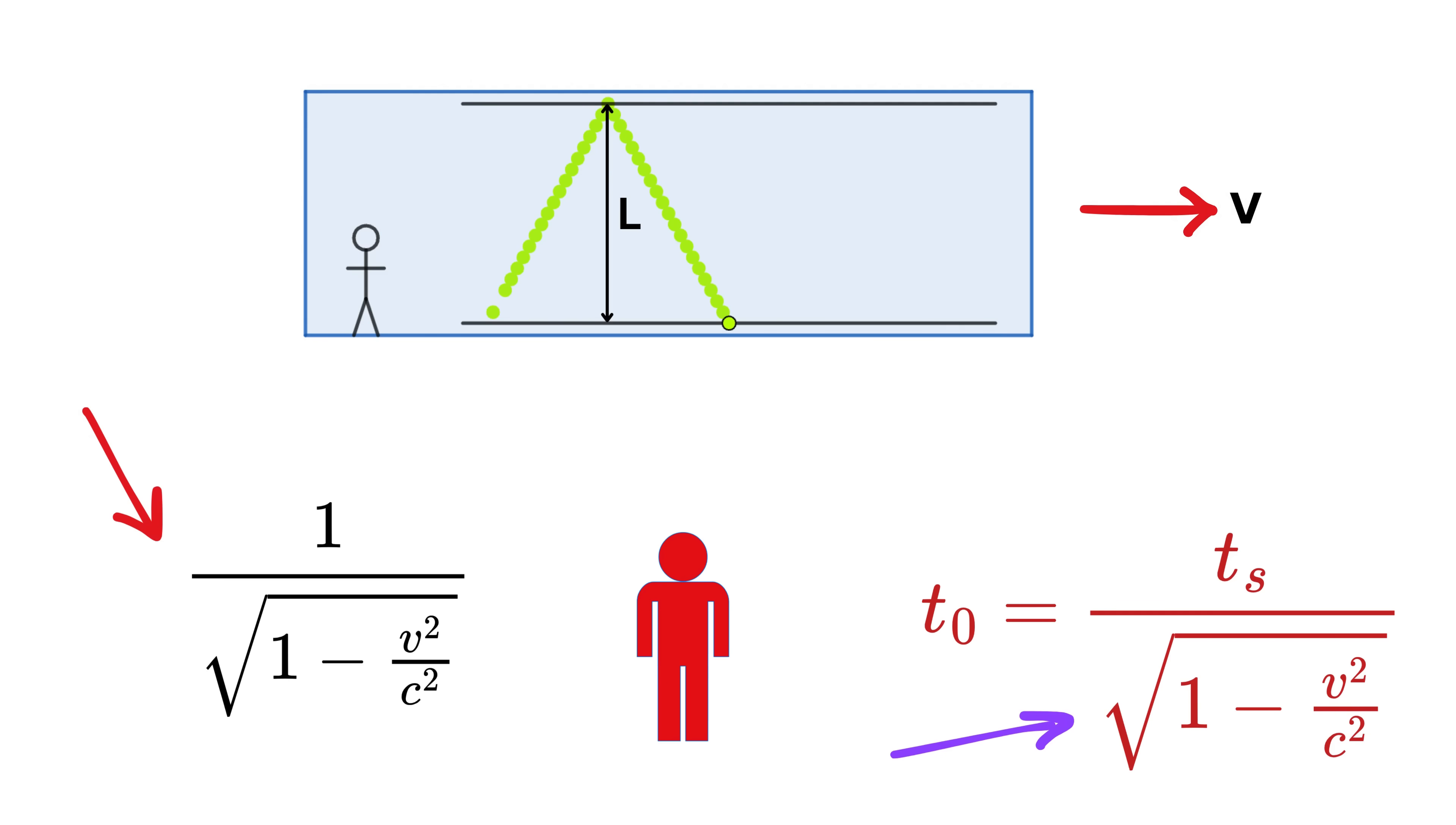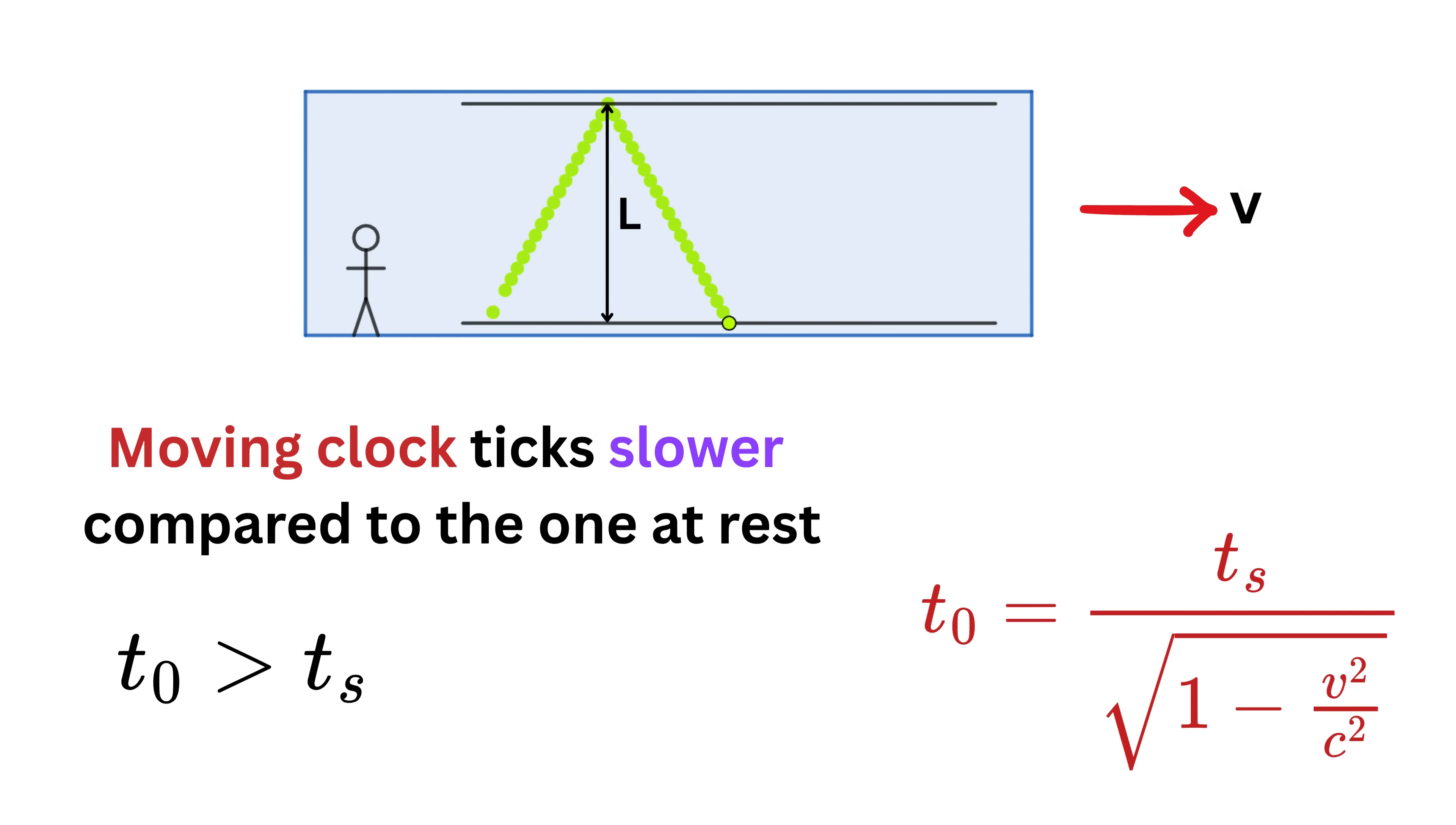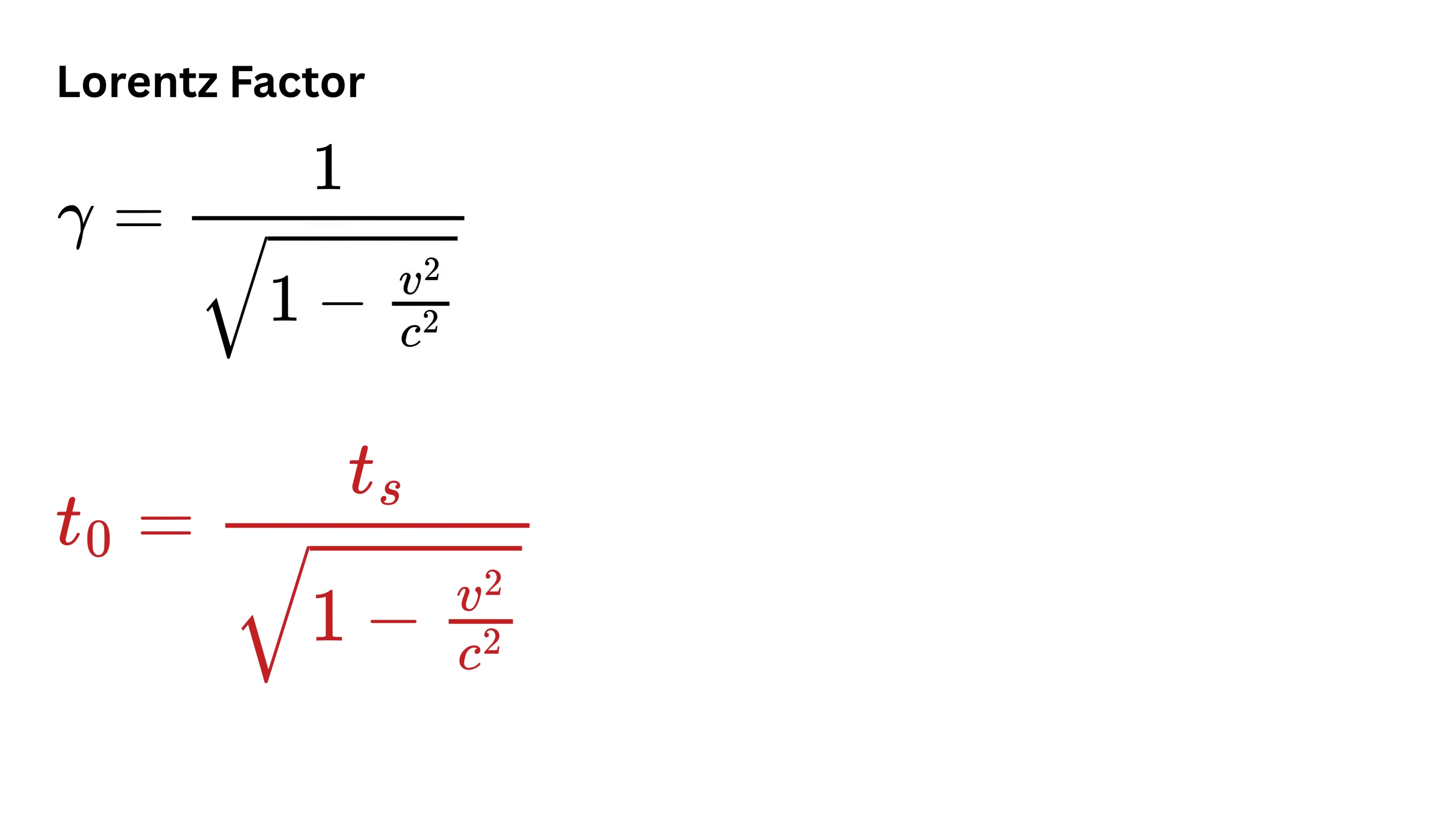Where this 1 over square root of (1 - v²/c²) is also called the Lorentz factor, and it is always greater than one. This means that t0 is greater than ts, or in simple words, the time measured by the outside observer is more than the time measured inside the spaceship, which means the moving clock ticks slower compared to the one at rest.